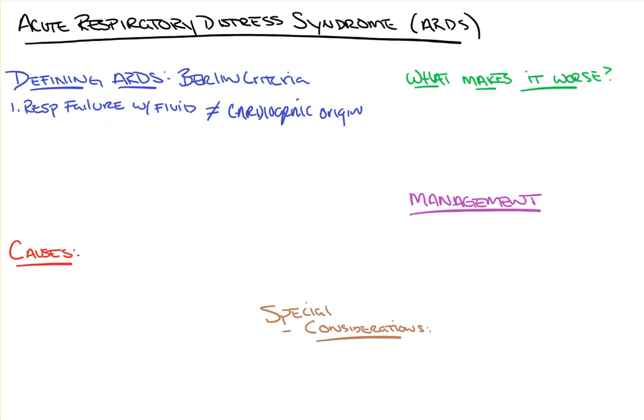Secondly, and I alluded to this earlier, this will come along with chest imaging that reveals bilateral patchy infiltrates — bilateral haziness, fogginess everywhere on both sides of the lung.